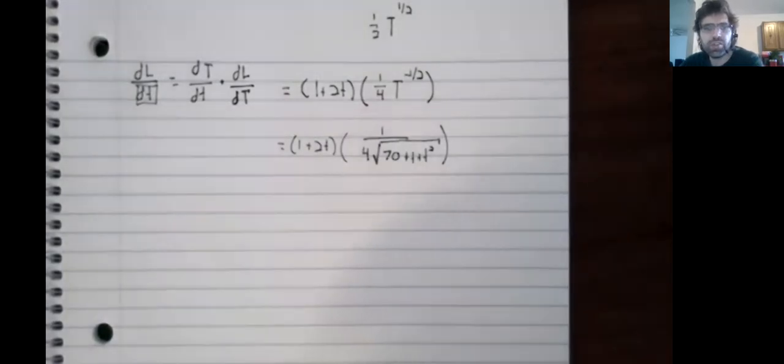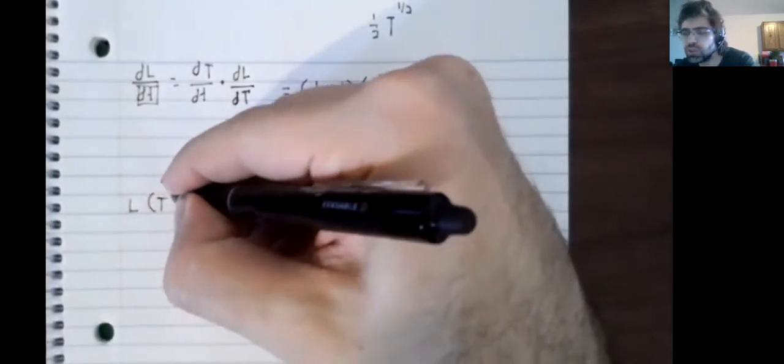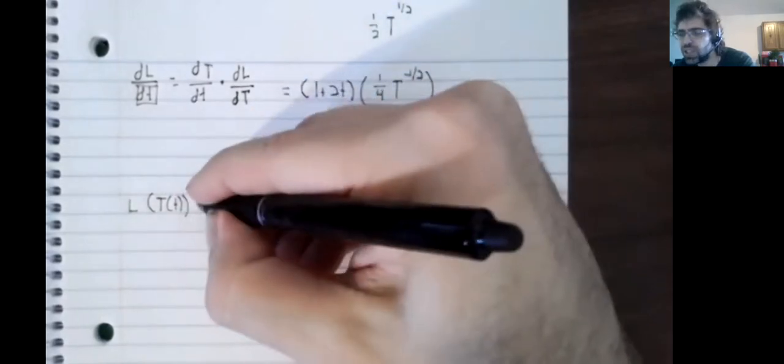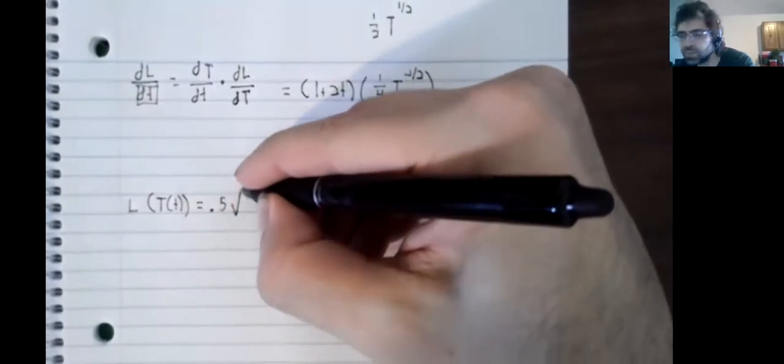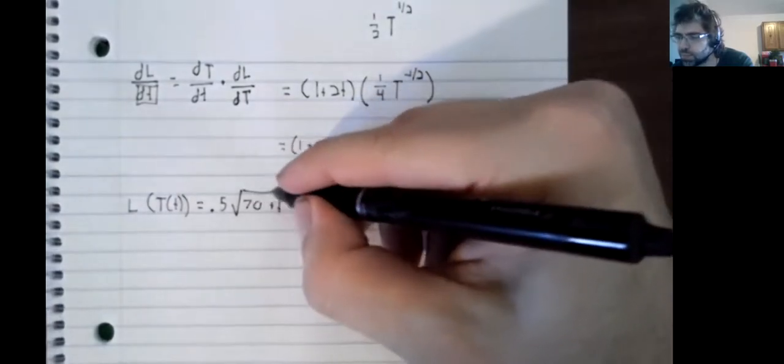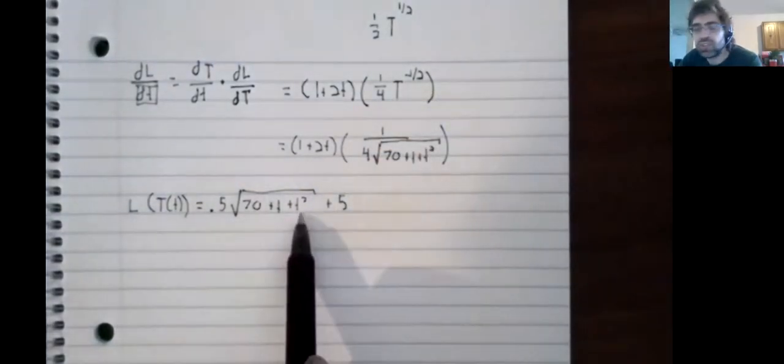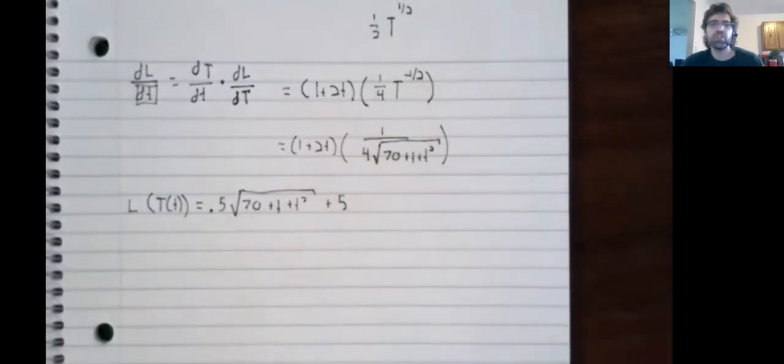Another way of approaching this problem would be to compute this composition. And now you have a function that takes time and gives you the length. And you can just take the derivative of this function. You're using the chain rule either way. The only thing that varies is what form of the chain rule you're looking at.